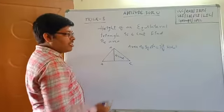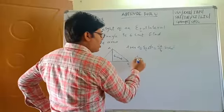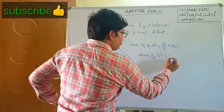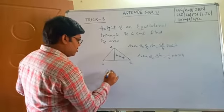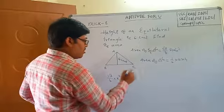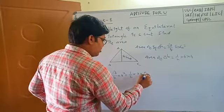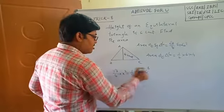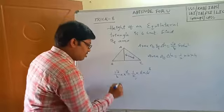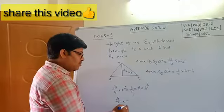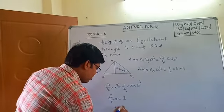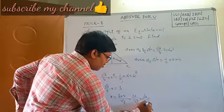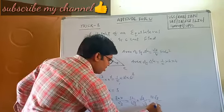The area of an equilateral triangle is also equal to half base into height. So comparing both: root 3 by 4 times x squared equals 1 by 2 into base x into height 6. The 2s and 4 cancel, x cancels both sides, giving root 3 by 4 x equals 3. So x equals 3 times 4 by root 3, which is 12 by root 3. Rationalizing: 12 root 3 by 3 equals 4 root 3.